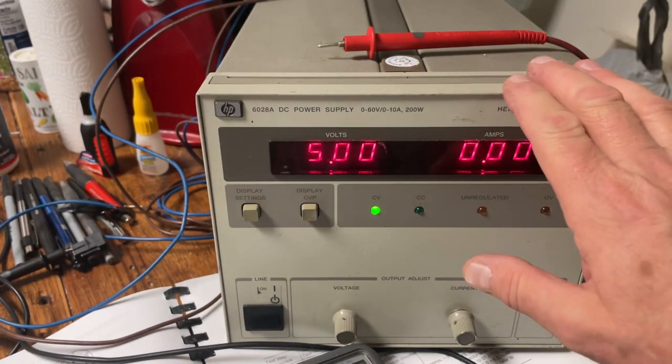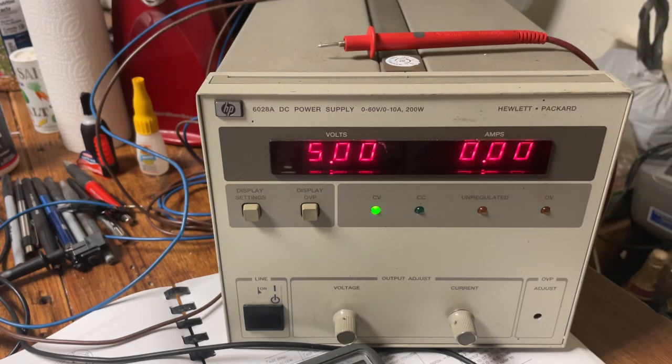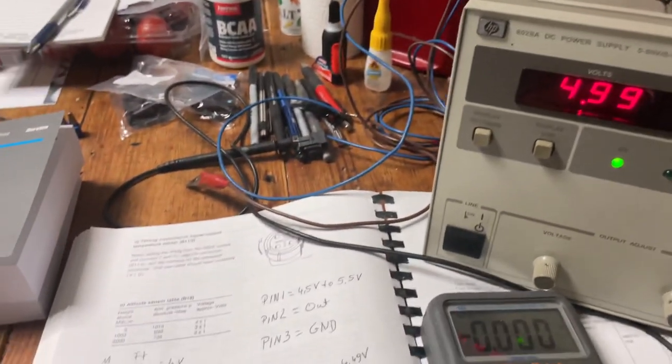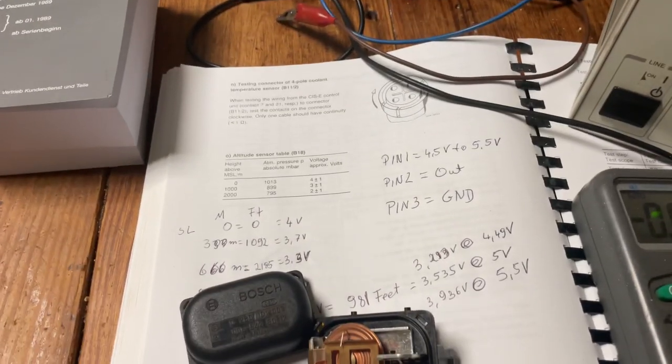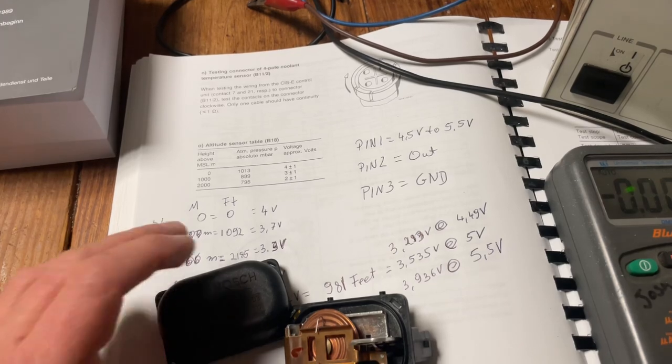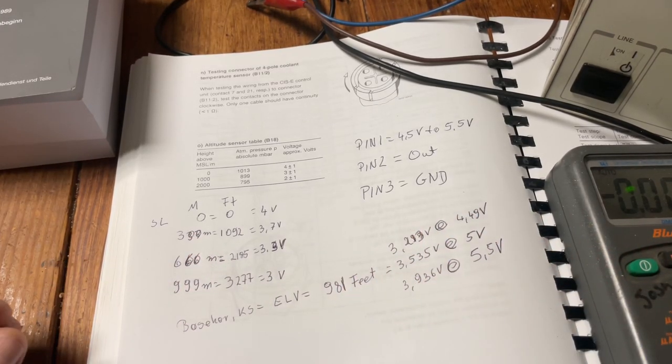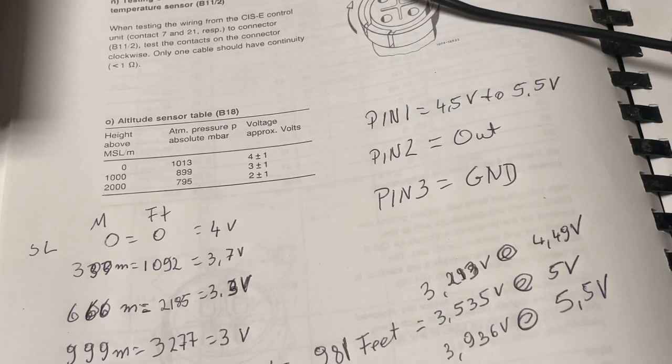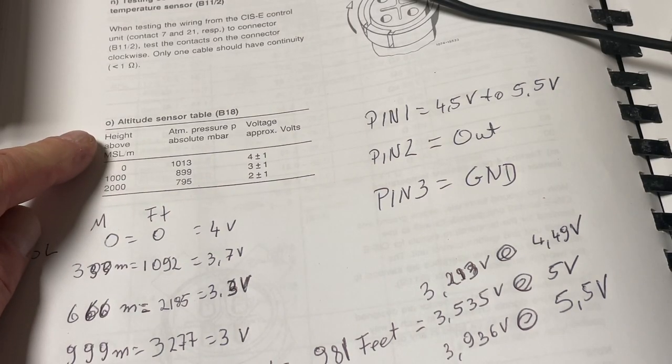I set the unit up because this system works off 5 volts and the 5 volts is supplied by the ECU or CIS unit. Let me turn this around now because this is really where we want to look at this here. What I did is I pulled up the book, which makes it a little bit easier.